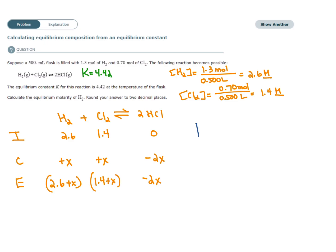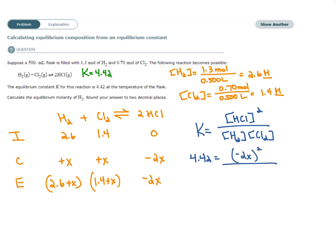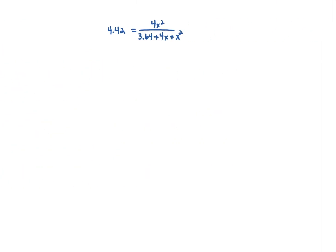We write the equilibrium constant expression: K equals the concentration of the products raised to the power of the coefficient over the concentration of the reactants raised to the power of their coefficients. We plug in our numbers. On the numerator, (−2X)² is just −2X times −2X, and on the denominator we use FOIL. We're rearranging this equation to fit standard form so we can use the quadratic formula.